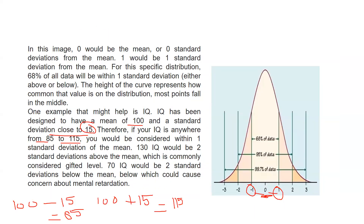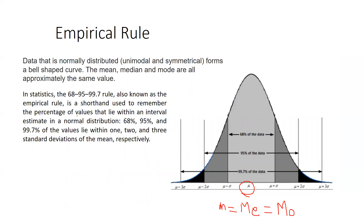This is the empirical rule — also called the 68-95-99.7 rule. It is a shorthand used to remember the percentage of values that lie within interval estimates in a normal distribution: 68%, 95%, and 99.7% of values lie within 1, 2, and 3 standard deviations of the mean respectively.